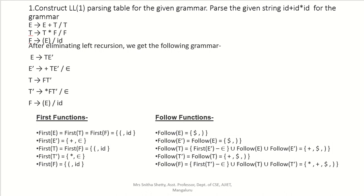Now let's look at the first function. First(E) = First(T) = First(F) = {(, ID}. First(E') = {+, ε}. First(T) = First(F) = {(, ID}. First(T') = {*, ε}. And First(F) = {(, ID}.